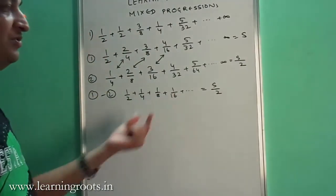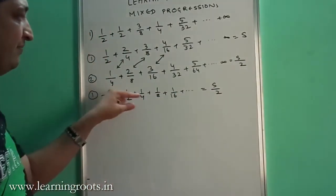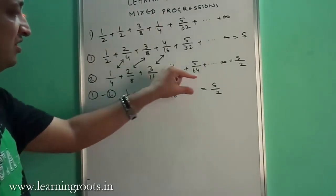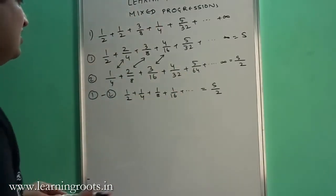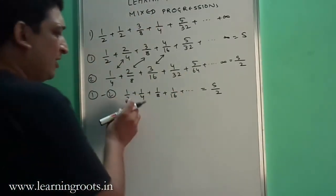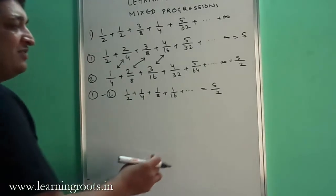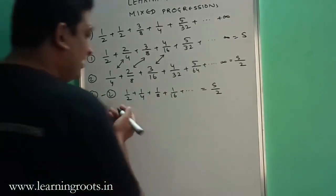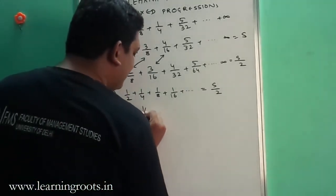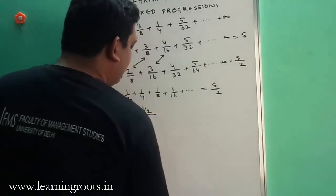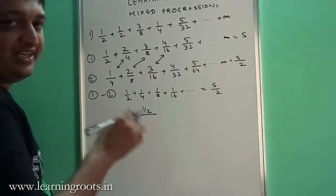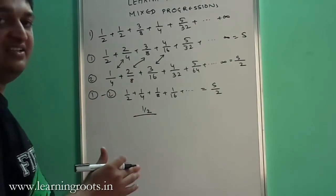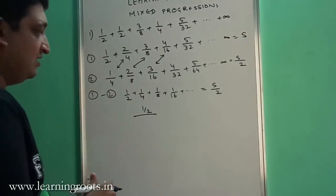Now you can see the pattern — it is pretty simple from where you started. What you have is 1/2 plus 1/4 plus 1/8 plus 1/16, which is nothing but an infinite GP where a, the first term, is 1/2. The sum of an infinite GP is a divided by (1 minus r), given that r is less than 1 and greater than minus 1.